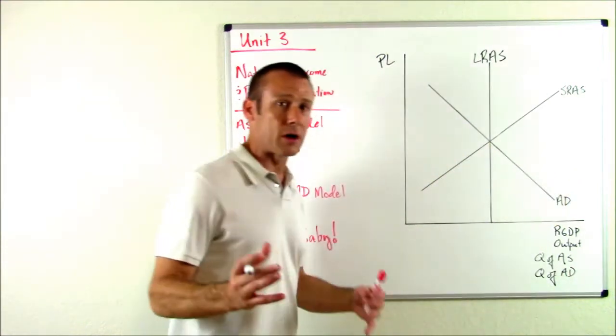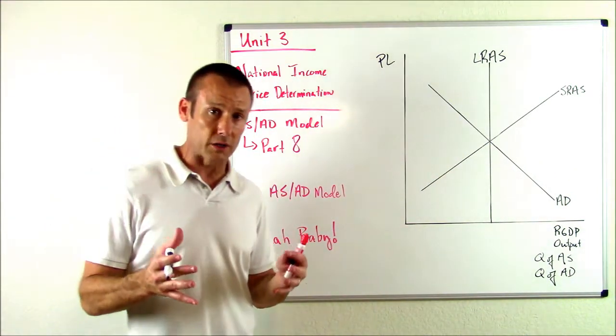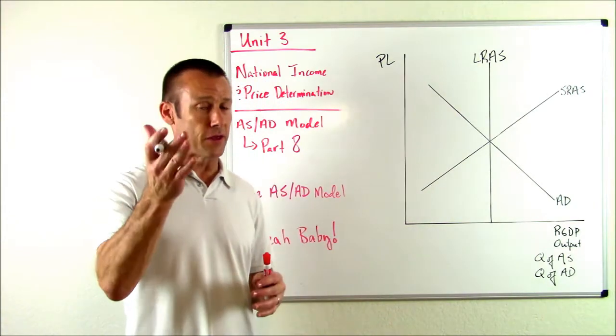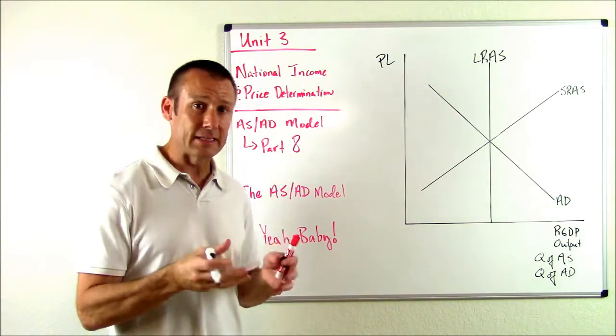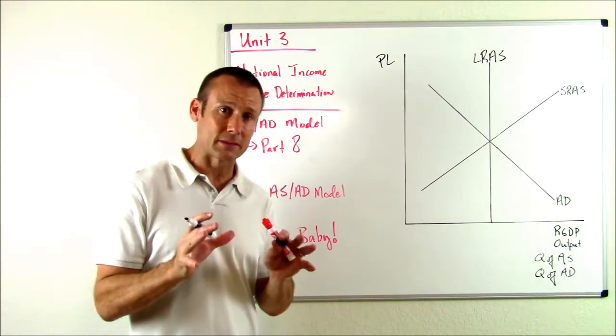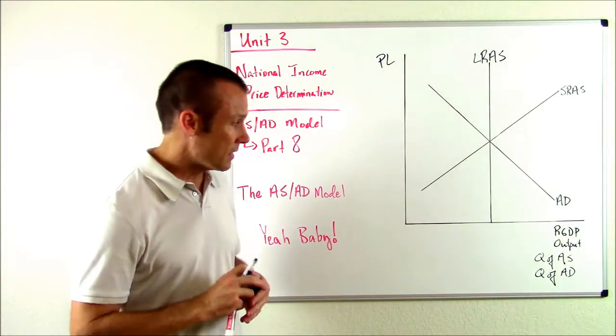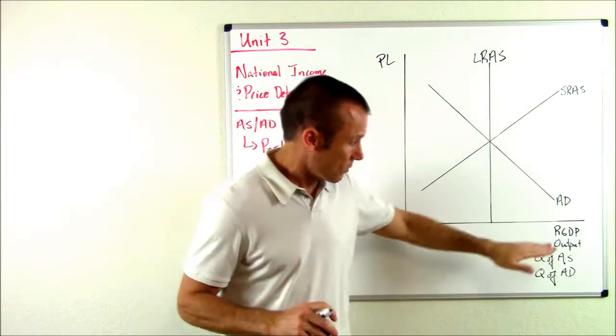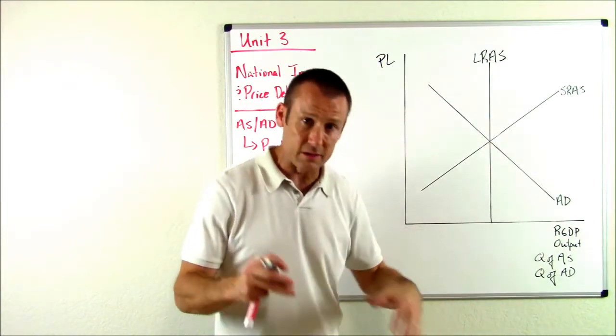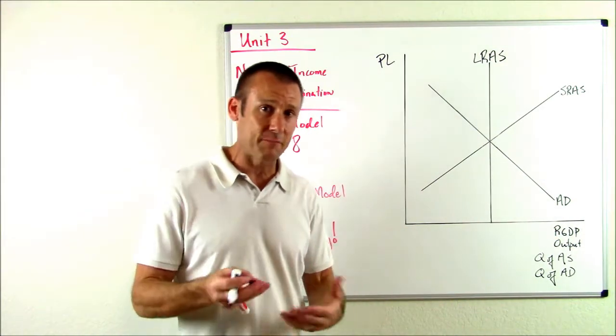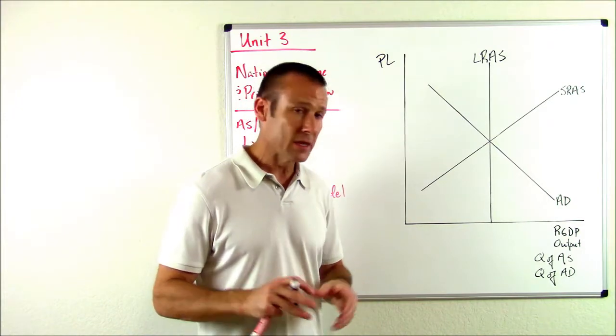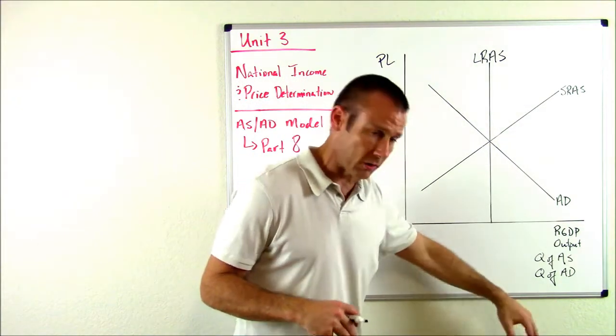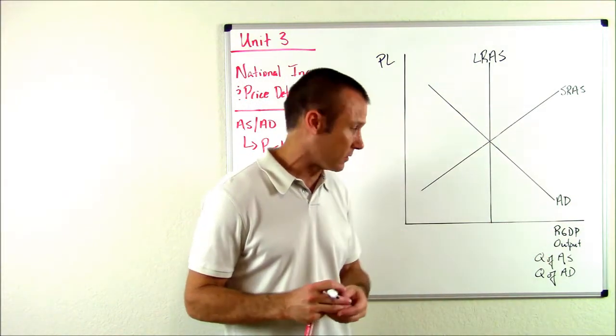We're also measuring the quantity of AD. Remember, AS is total production, so anytime I say AS, think total production. AD is total spending - anytime I say AD, think total spending. We're really measuring all of those on this horizontal axis in dollar amounts, dollars that have been adjusted for inflation. I won't write all of these, I'll just write real GDP.